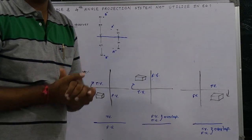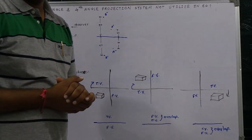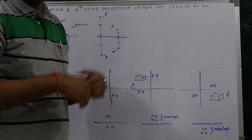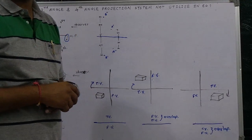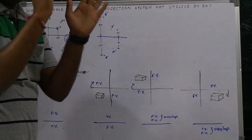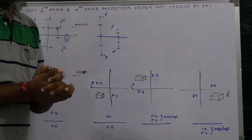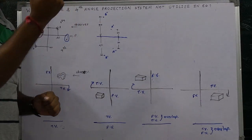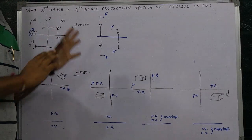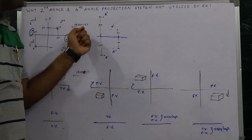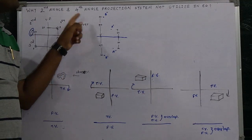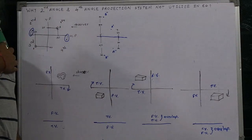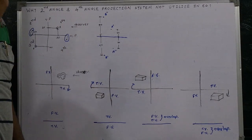Due to this overlapping, we do not use the second angle and fourth angle projection systems. I hope this question is now clear. Just focus on the logic — two things are fixed. If you change one parameter, don't be confused. If you change only the viewing direction of the observer, looking from the topward side instead, the analysis changes.